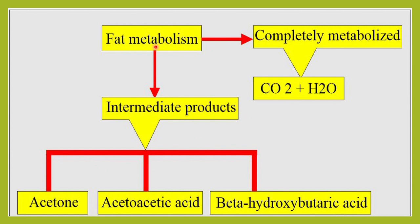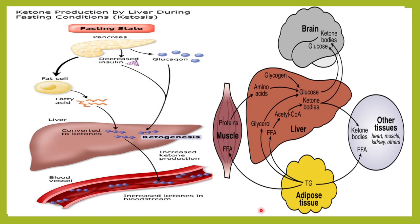Ketogenesis means the formation of ketone bodies. When fat metabolism is complete, we get carbon dioxide and water. When it is incomplete, it gives rise to intermediate products like acetone, acetoacetic acid, and beta-hydroxybutyric acid. These ketones are produced in the liver during fasting conditions when the body lacks adequate carbohydrates.